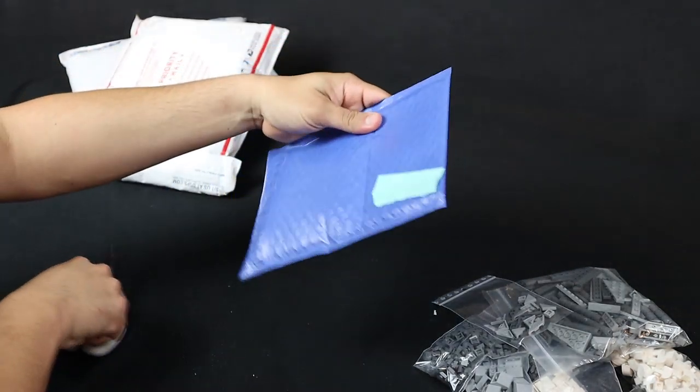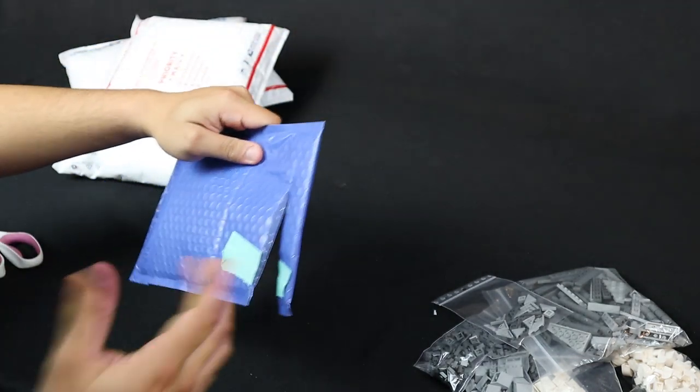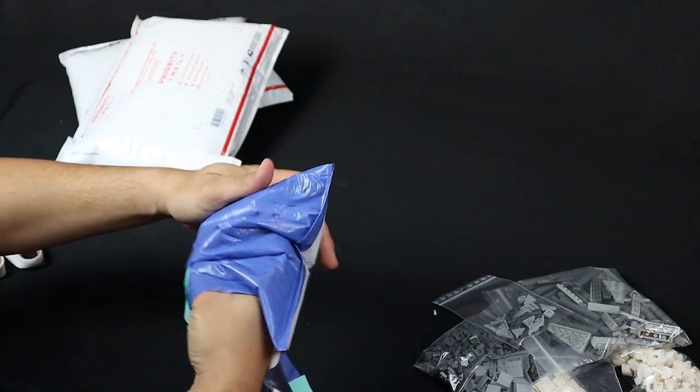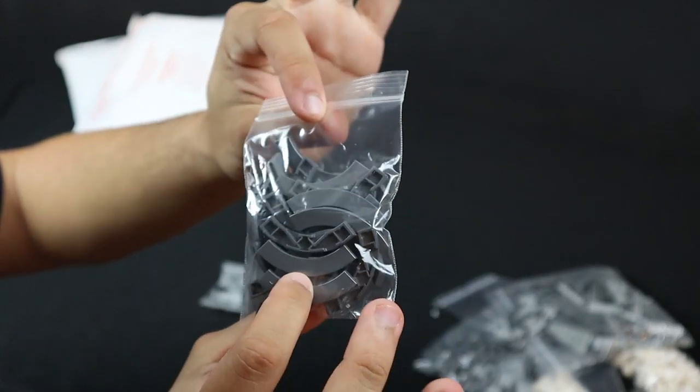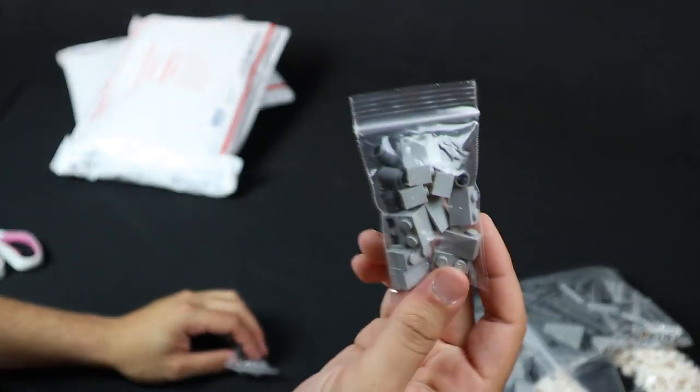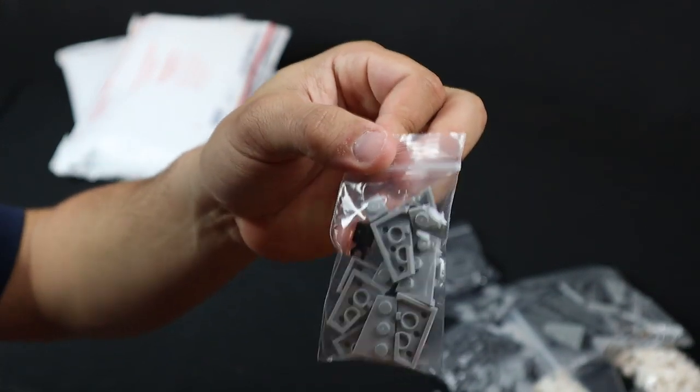We'll go ahead and get the last smaller package here out of the way. Once again, I hope you're all enjoying these videos. I like bringing these haul videos to show you what's going on. The first bag in this package is going to be some more of the 4x4 dark bluish gray tiles for the top roof, and then here we have some 1x1 dark bluish gray round brick, some 1x2 brick, and a couple of wedges which are going to be used on the top of the roof.